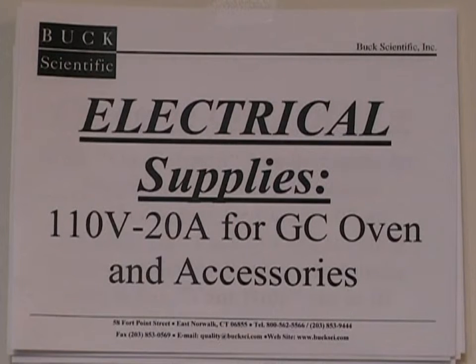For routine operation, a 20 amp 110 volt supply of electricity should be sufficient to allow the GC to be programmed to its maximum temperature. This represents the highest draw that the system will usually make on the electrical supply, but occasionally 10 amp or 15 amp services will be sufficient.